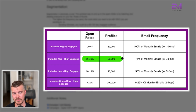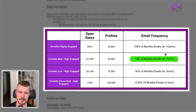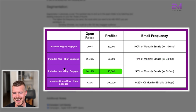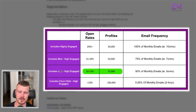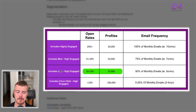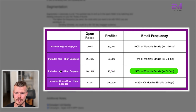The medium-to-high engaged would be around a 15 to 20% open rate — about 50,000 profiles — and they get about 75% of the monthly email, so about 7 out of 10. The low-to-high engaged, including everyone from low to medium to high, open rates fall a bit — shooting for around 10 to 15%. Profiles would be 75,000 out of 100,000, and they'd receive about 50% of your monthly emails — so if you're sending 10, they'd receive 5.